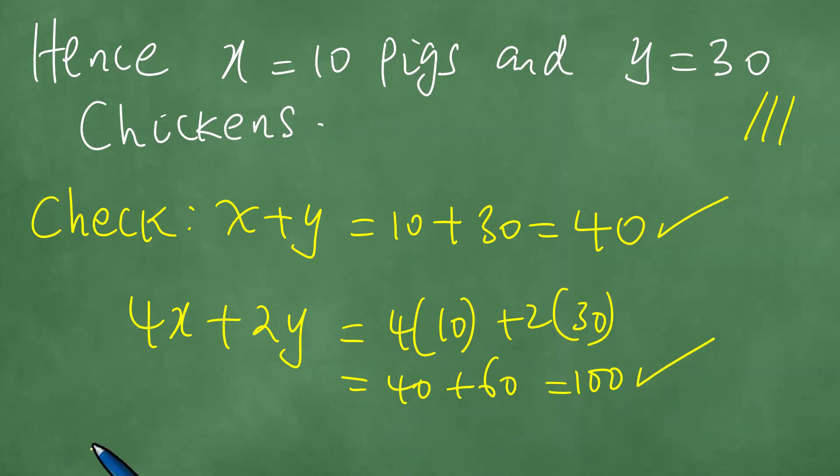And we counted, therefore, a total of 100 legs and a total of 40 pigs and chickens in the farmyard. We are excited about this and we've solved this problem. Thanks everybody for joining us, and goodbye to you.